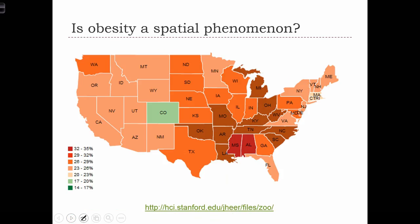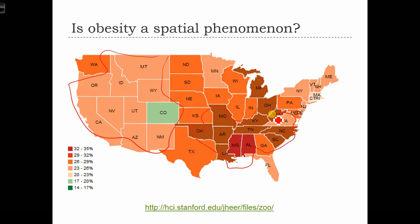Here's another example, this time looking at obesity across the country. We have high obesity indicated by darker red colors and low obesity with paler colors, especially going to the greens in super low obesity states. Does this look like a random pattern to you? It doesn't to me. It looks like we have a cluster of low obesity states over here, a strong clustering of high obesity states over here, and then some middle obesity states elsewhere. Clearly, these colors have some kind of spatial organization.